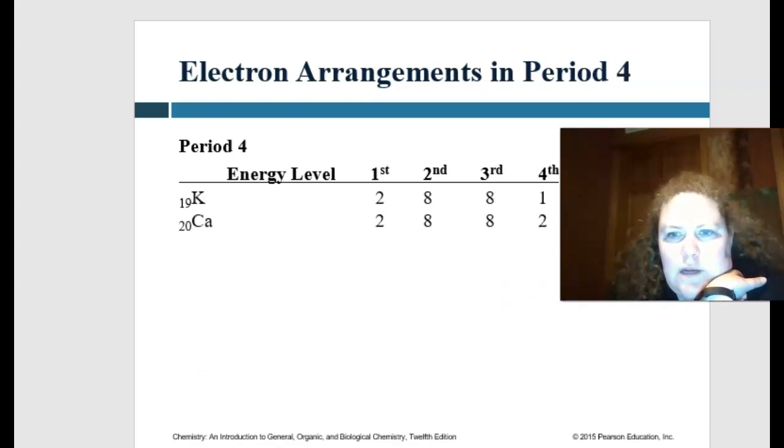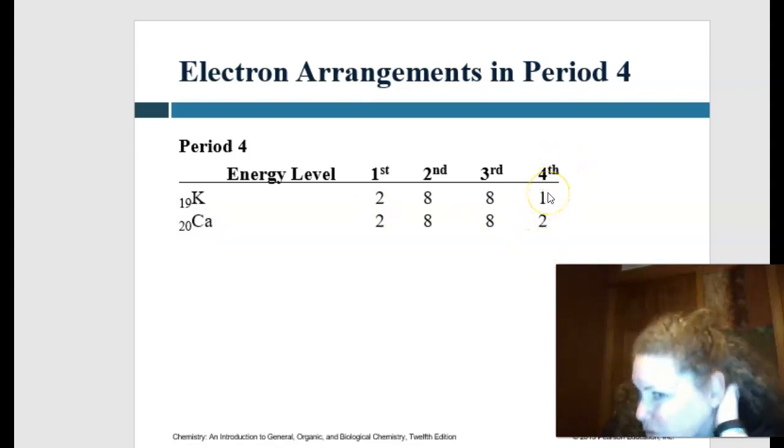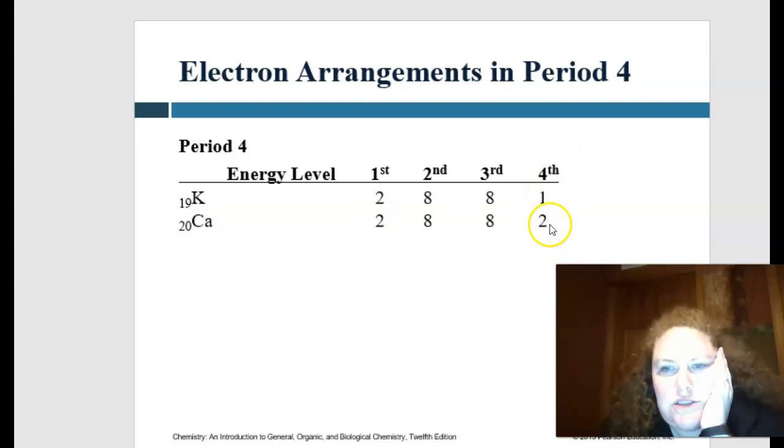And so the arrangement, you have to fill the first, then the second, then the third, and then the fourth. If we have extra, because I think they told you to go up to the 20th one, in the fourth orbital, we would just have to know that we have one and then two electrons.